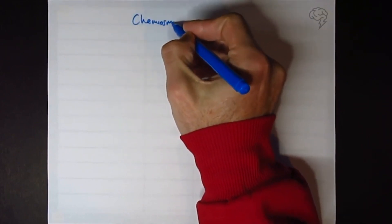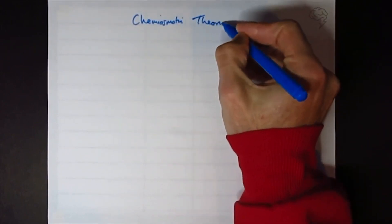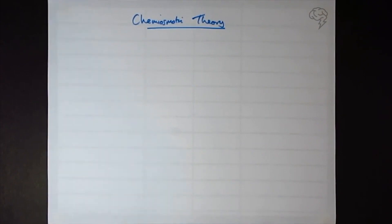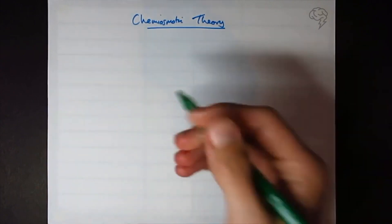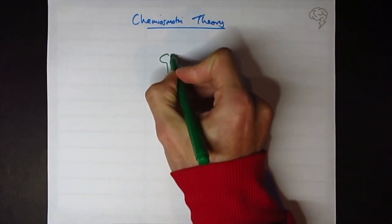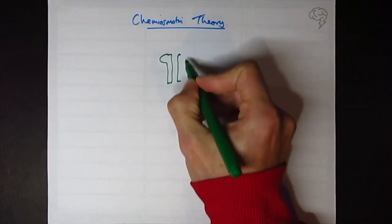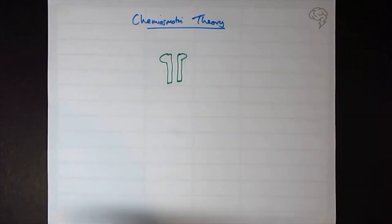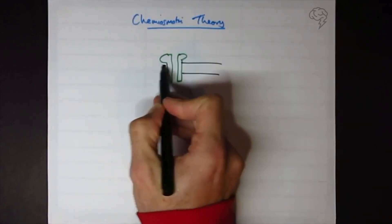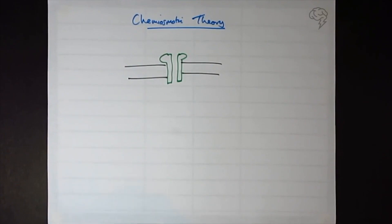Okay, so this short video is on chemiosmotic theory. Basically, you'll have come across this in any way that we make ATP, so this is going to be in light-dependent reactions, could be in oxidative phosphorylation. You'll probably be familiar with this guy here, and he's going to sit in a membrane. This molecule here is ATP synthase.